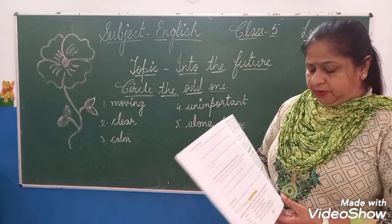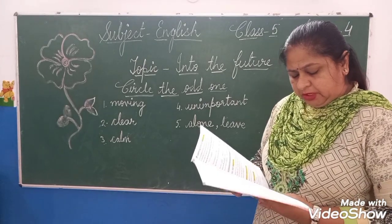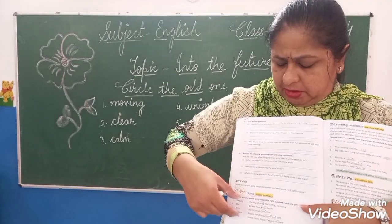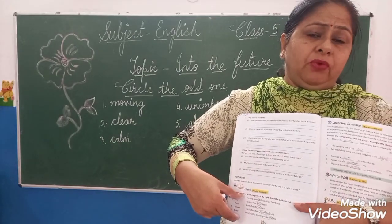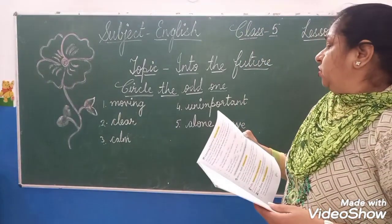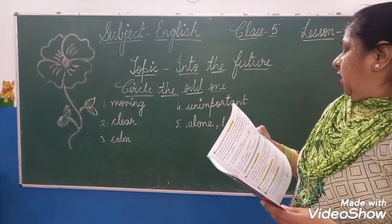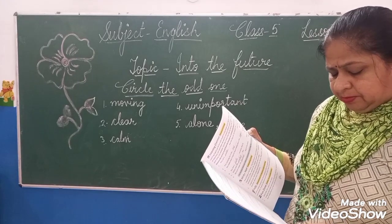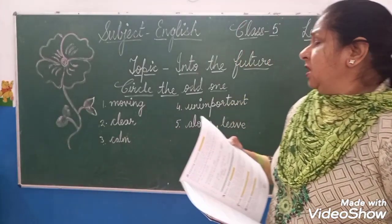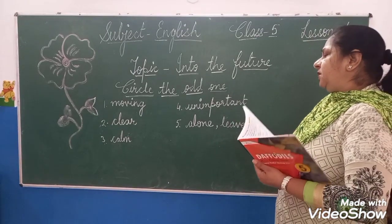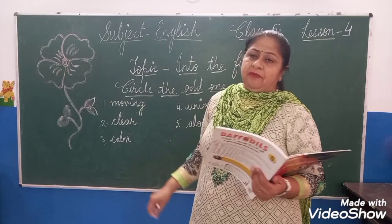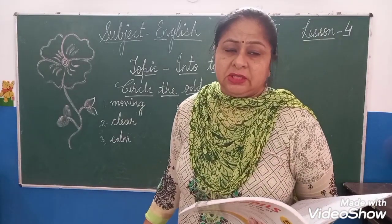Now, children, come to the vocabulary part given on page 28. Here the exercise is given — vocabulary part. You have to circle the odd one out. You have to look at the synonyms of a word; there are many synonyms given, and you have to circle the word whose meaning is different.